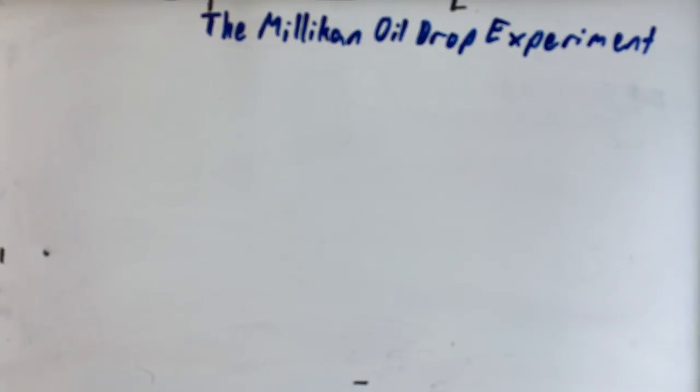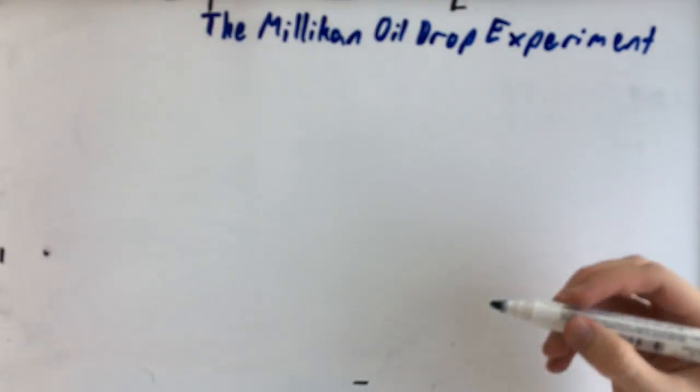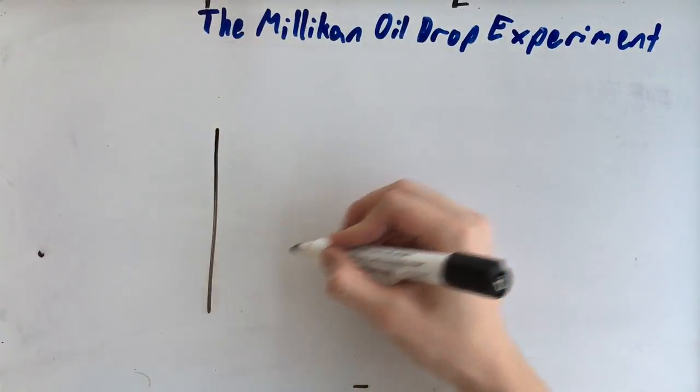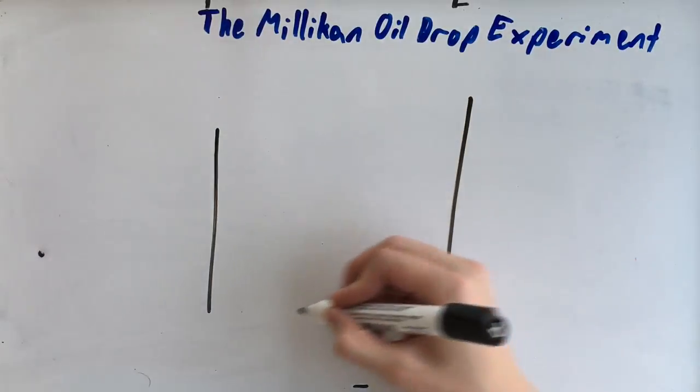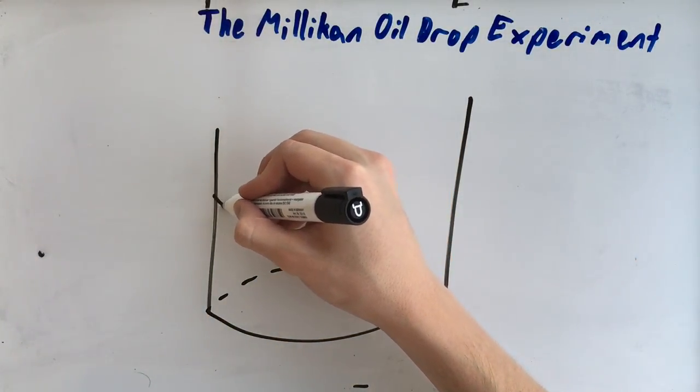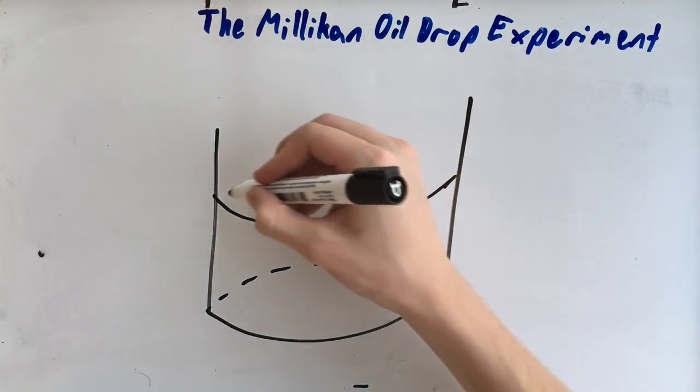This was done to figure out the charge of an electron. What you have is this cylindrical device with different levels, two levels actually.